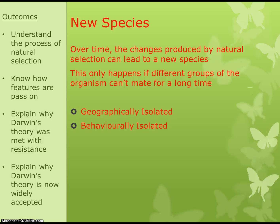For example, if we have a population of chimps on one island and one of them develops an adaptation that sweeps through their population, that adaptation would not be shared with chimps on a different island because they can't breed. Eventually, over time, those two populations of chimps would become a completely different species.